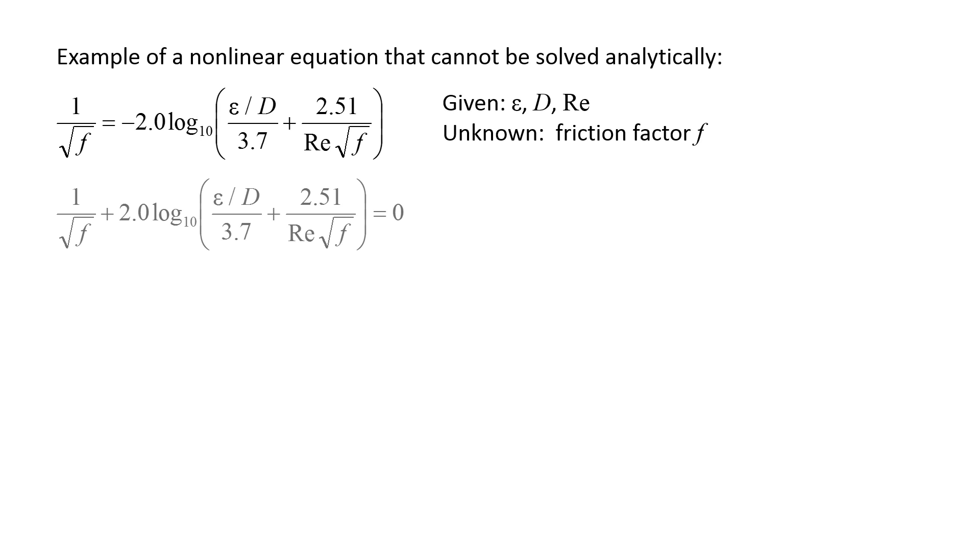We can bring all the terms to the left side of the equation and notice that we have some nonlinear function equal to 0. In this case, the variable in the nonlinear equation is the friction factor f instead of a distance x. Assuming that we know epsilon, d, and the Reynolds number, we need to find a value of f that will make the left side of the equation equal to 0. Unfortunately, there is no way to solve for the friction factor analytically, so we must develop a numerical method to find it.